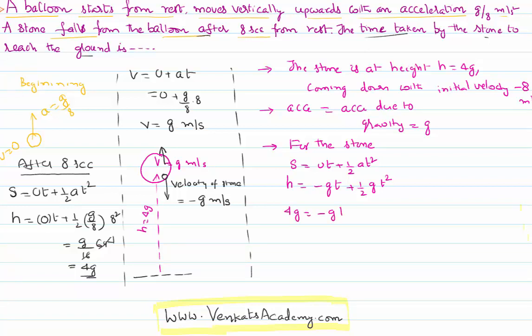g is common, I can cancel. So 4 = -t + t²/2. That is -2t + t²/2 = 4, or t²/2 - 2t = 4. Therefore I can rearrange my equation.